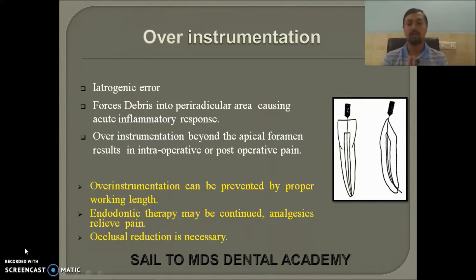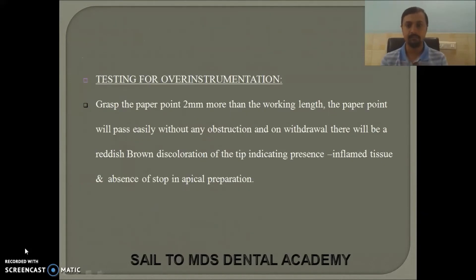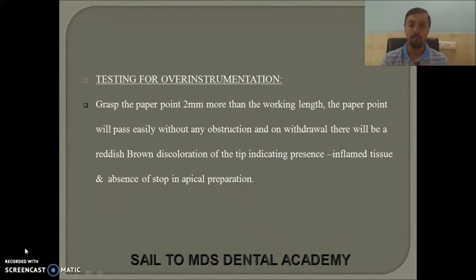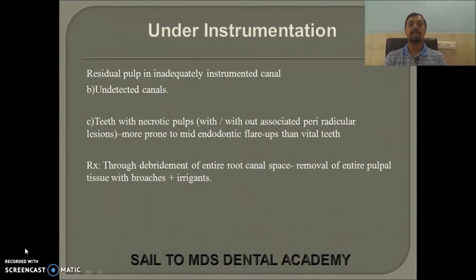To avoid over-instrumentation, follow proper working length. If it occurs, continue therapy but administer proper analgesics and perform occlusion reduction. To know if your instrument has gone over, grasp the paper point 2 mm more than the working length — it will pass easily without hindrance, and on withdrawal there will be reddish discoloration of the tip, indicating inflamed tissue and absence of a stop in the apical preparation.